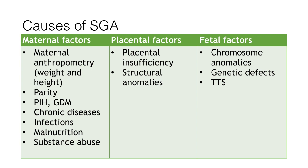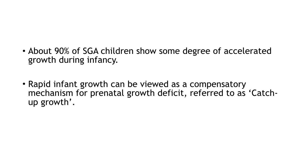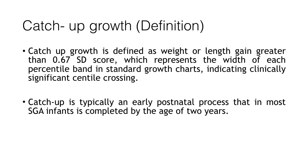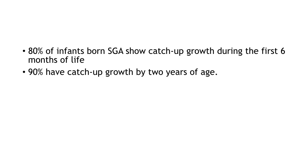Now we will come to the growth in SGA babies. About 90% of SGA children show some degree of accelerated growth during infancy. This rapid infant growth can be viewed as a compensatory mechanism for prenatal growth deficits, referred to as catch-up growth. Catch-up growth is defined as weight or length gain greater than 0.67 standard deviation score, which represents the width of each percentile band in the standard growth chart, indicating clinically significant centile crossing. It is typically an early postnatal process that, in most SGA infants, is completed by the age of 2 years. 80% of infants born SGA show catch-up growth during the first 6 months of life, and 90% have catch-up growth by 2 years of age.